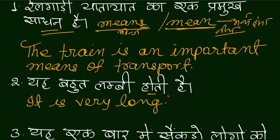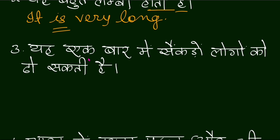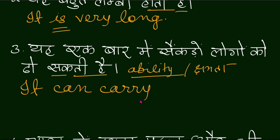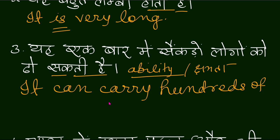Yeh ek baar mein saikdon logon ko dho sakti hai — here 'dho sakti hai' indicates ability or capacity. So we use 'can': 'It can carry hundreds of people at a time.'